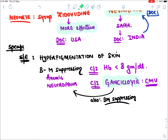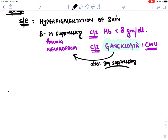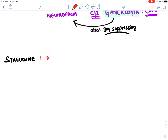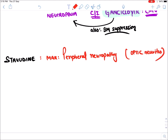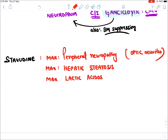Next is Stavudine. Stavudine causes maximum peripheral neuropathy, which may sometimes manifest as optic neuritis. It also causes maximum fat accumulation in the liver — hepatic steatosis — maximum lactic acidosis, and maximum lipodystrophy among all drugs. This is all due to inhibition of Mitochondrial DNA Polymerase enzyme.